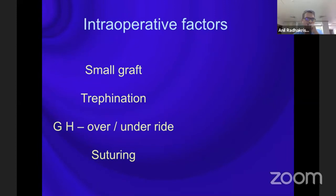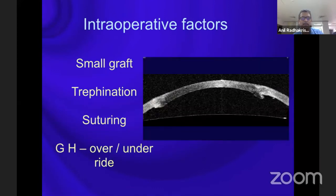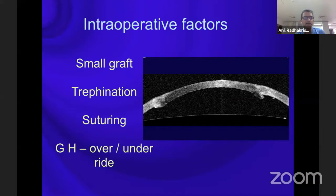Among the intraoperative factors, the trephination has to be perpendicular both on the graft as well as the host. Quite often you see graft-host override or underride, which is pretty common. Suturing plays a very major role — the type of material used, the tightness, the length of the bites, the intraocular pressure during surgery, and the speculum pressure all influence the outcome.